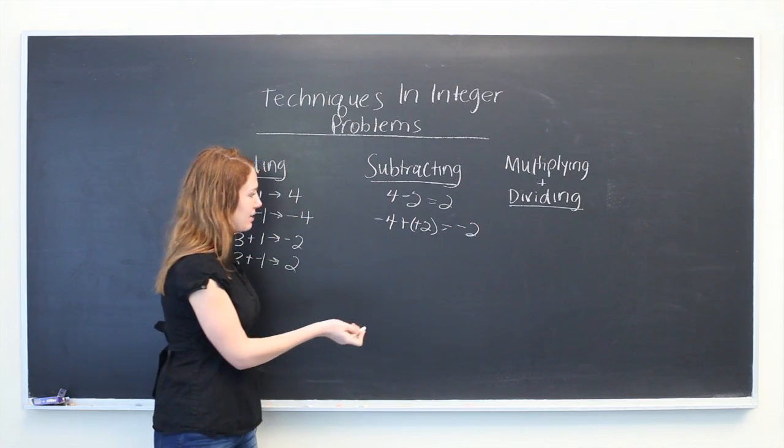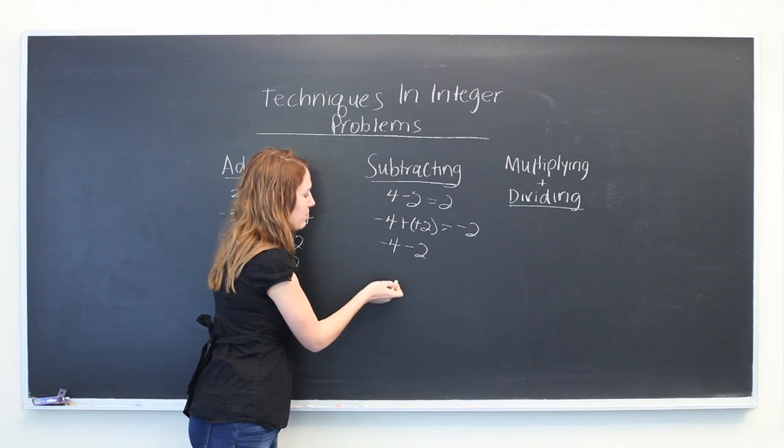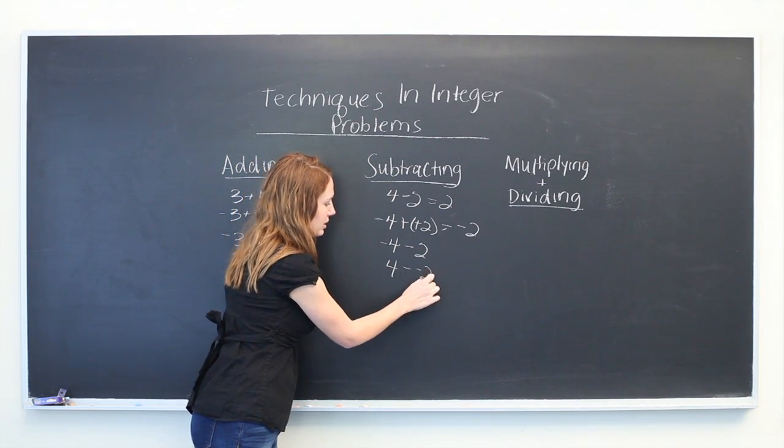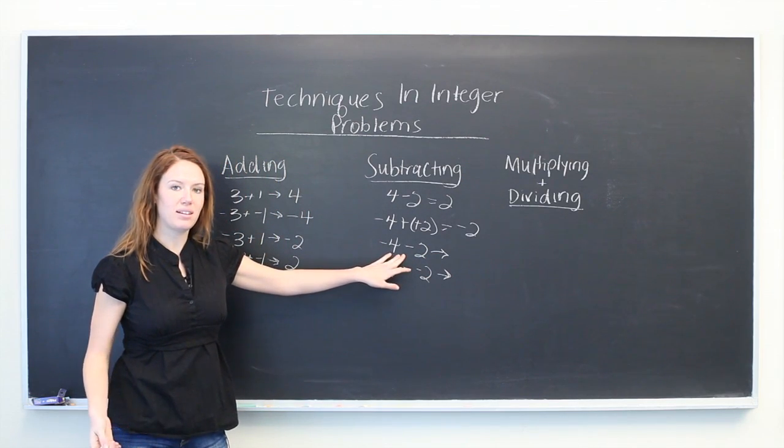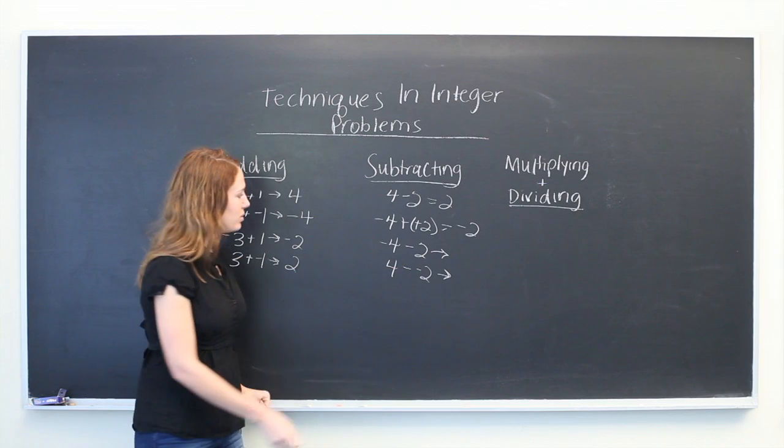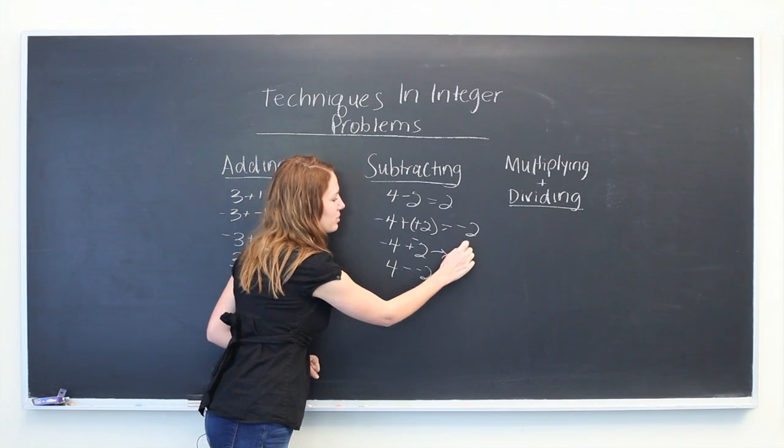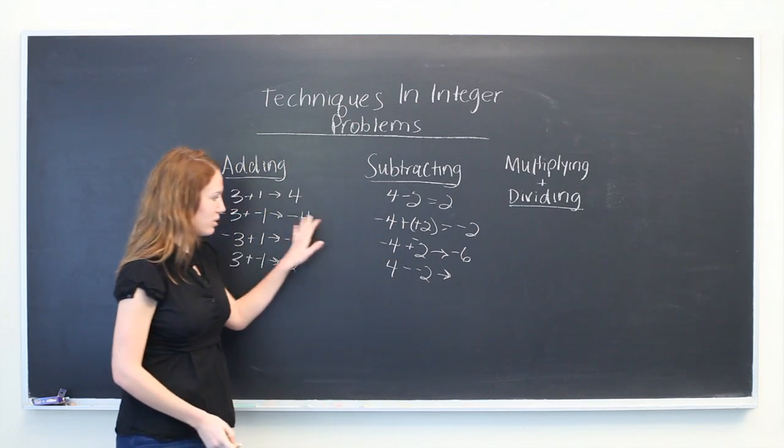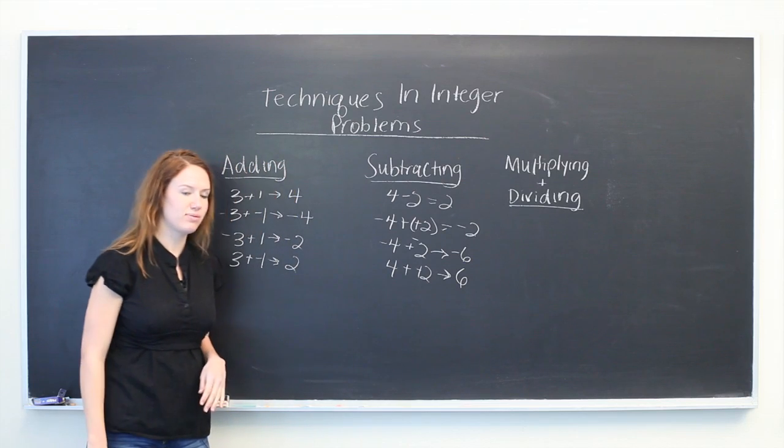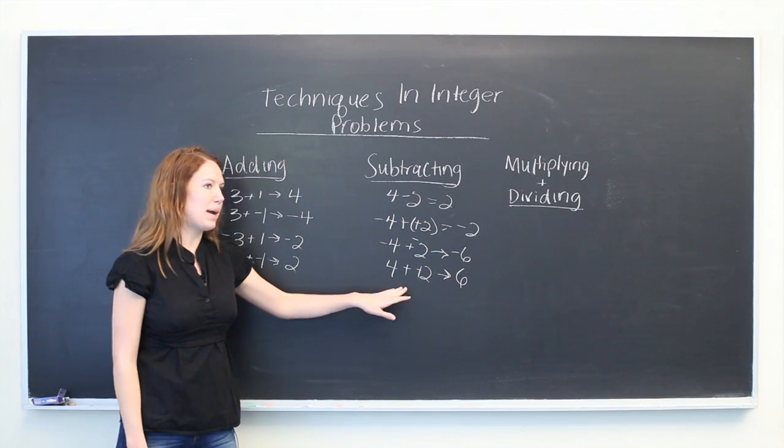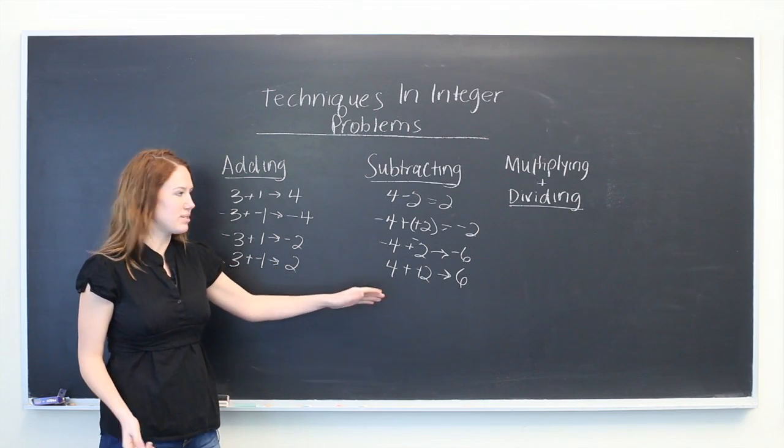If we have just one negative number, we can use this same rule of changing the minus sign to adding the opposite value to make our life a little easier. So minus 4 plus minus 2. And we have the rules of addition. 4 minus minus 2, so adding the opposite, which is 6, 4 plus 2. Whereas before, 4 minus minus 2 sounds a little more complicated than just 4 plus 2.